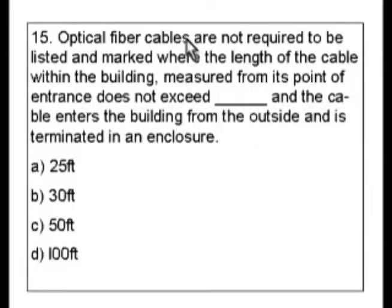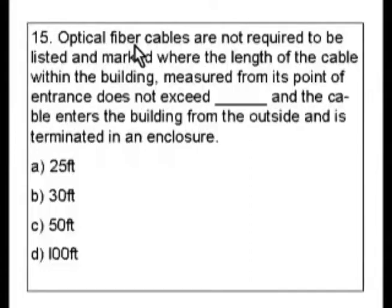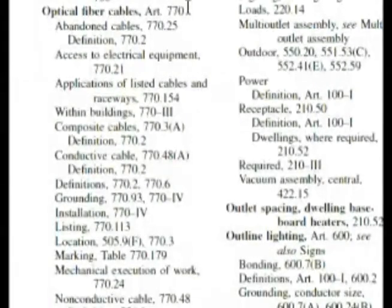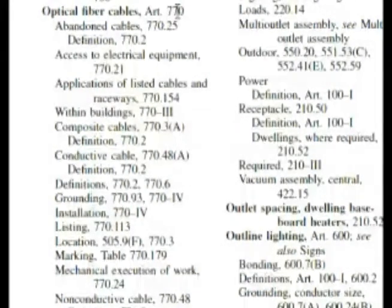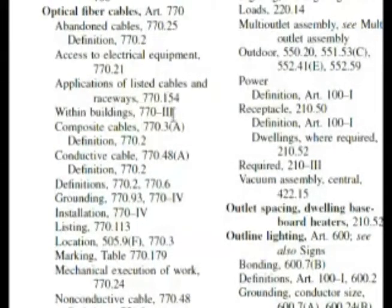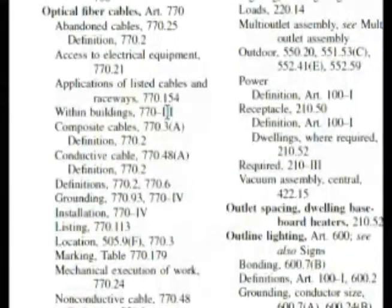Now we're talking about optical fiber cables and the cables with listing and marking, so these are the things we're going to have to look at. There is a section in the code on optical fiber cables, so let's go to the index and find that if you don't know where that is right now. Here we are in our index — optical fiber cables — and it's Article 770. As we go down, we can see in Roman numeral III it's talking about within a building.